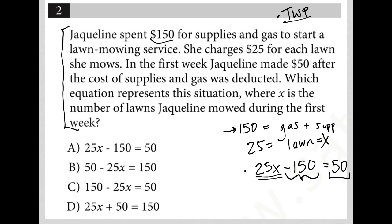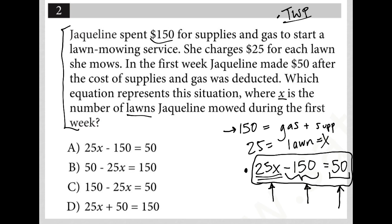Then it asks: which equation represents this situation where X is the number of lawns Jacqueline mowed during the first week? I've already done that. I'm certain this equation represents what I read — she mowed some lawns at $25 each, subtracted the $150 for gas and supplies, and had $50 left over. So the equation that fits is choice A, and that is our correct answer.